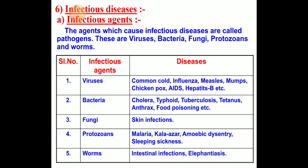Bacteria cause cholera, typhoid, tuberculosis, tetanus, anthrax, and food poisoning. Fungi cause skin infections. Protozoa cause malaria, kala-azar, amoebic dysentery, and sleeping sickness. Worms cause intestinal infections and elephantiasis.